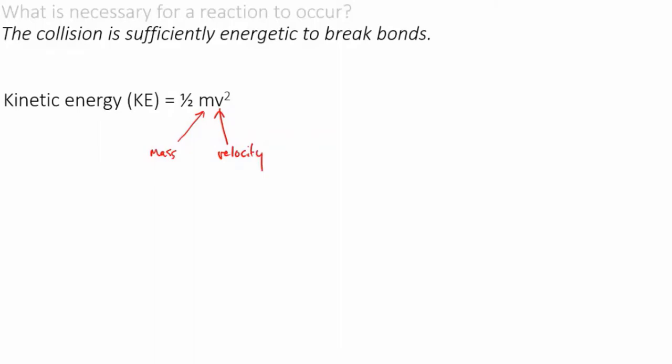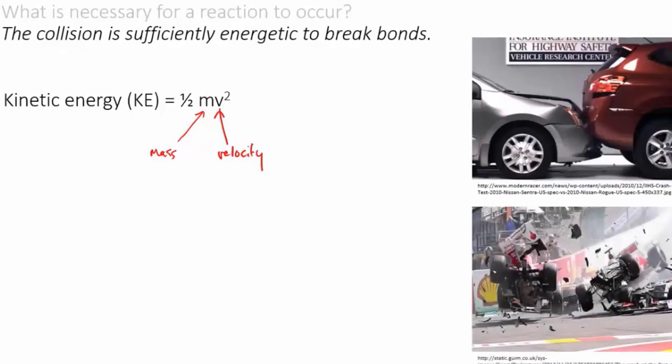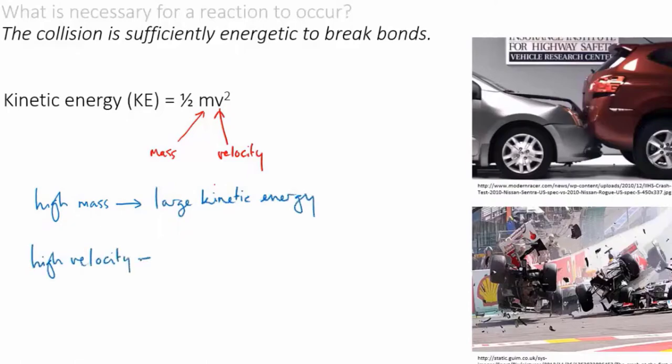Think about a car crash. There are two main things that affect how bad a crash is. One is the mass of the vehicles. Being run into by a semi-trailer is much worse than being run into by a hatchback. The other is the speed they're traveling at. High-speed crashes are worse than low-speed crashes. Both of these facts are true because for higher masses and higher velocities more energy is involved.